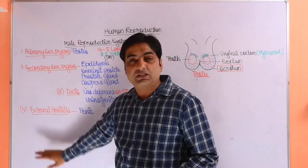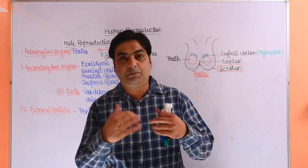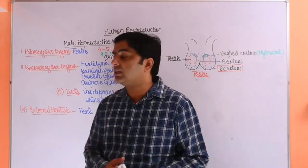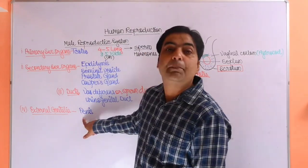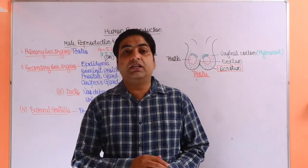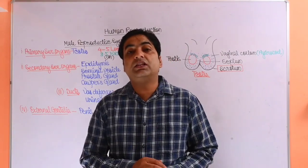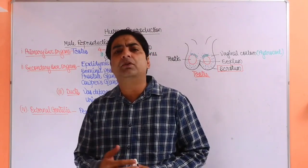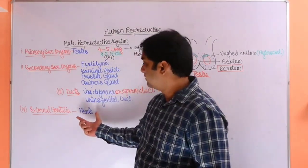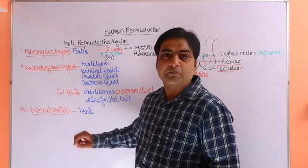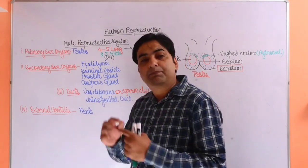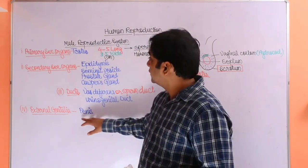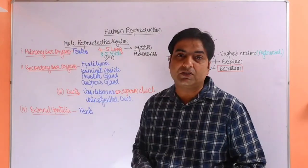Now the fourth is external genitalia. The part of reproductive organ of male which is found outside of the body is called penis. This penis is a structure which is responsible for the ejaculation or placing the sperm into the female body. This is the general introduction to male reproductive system.